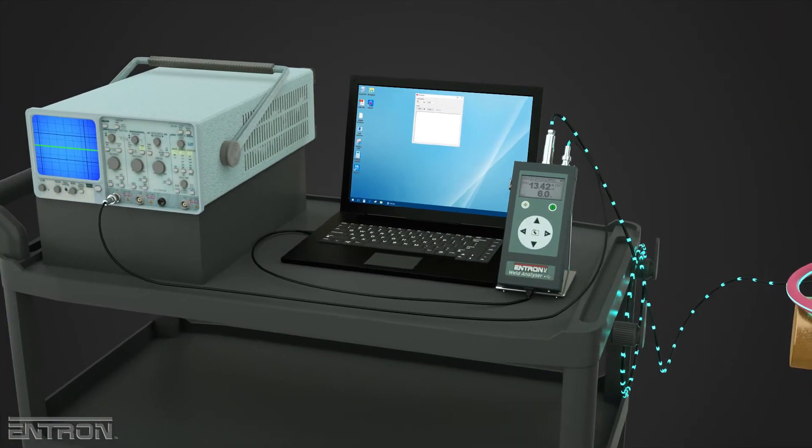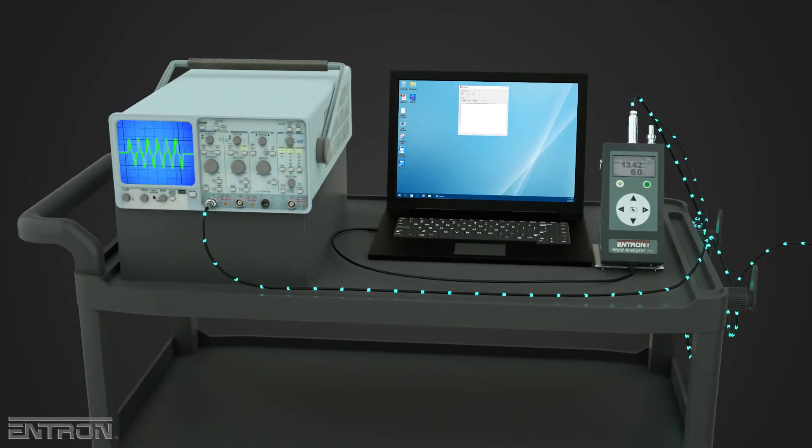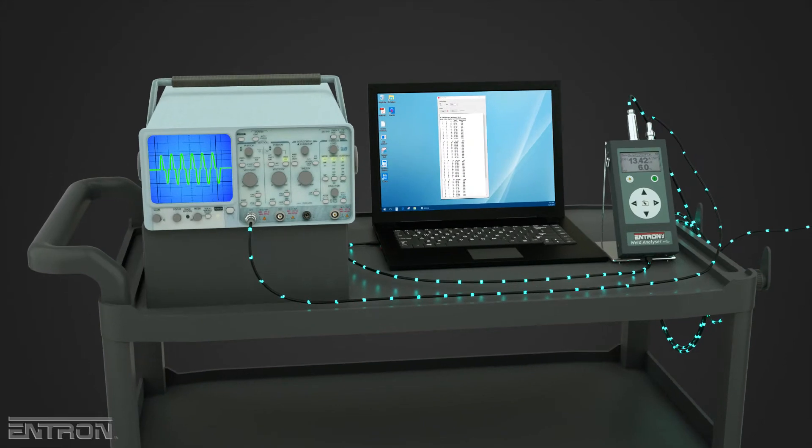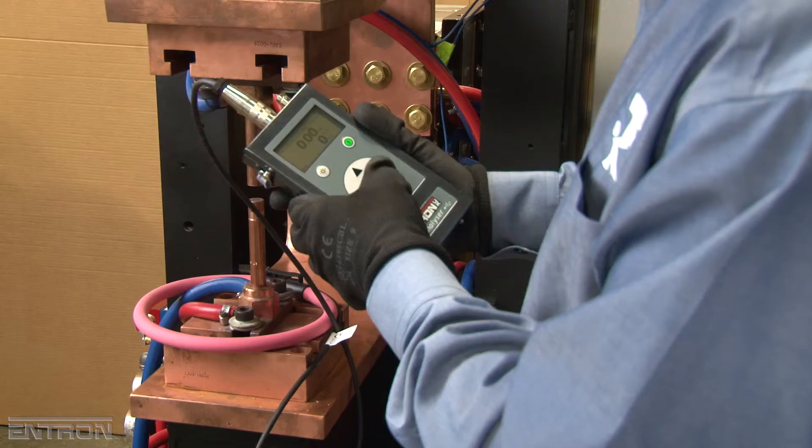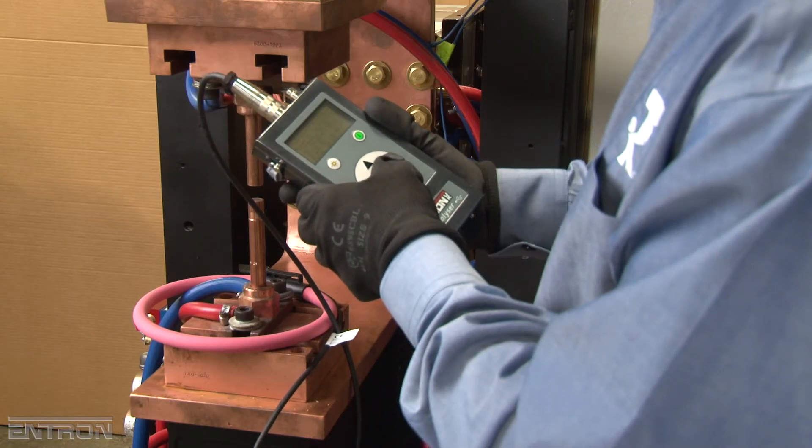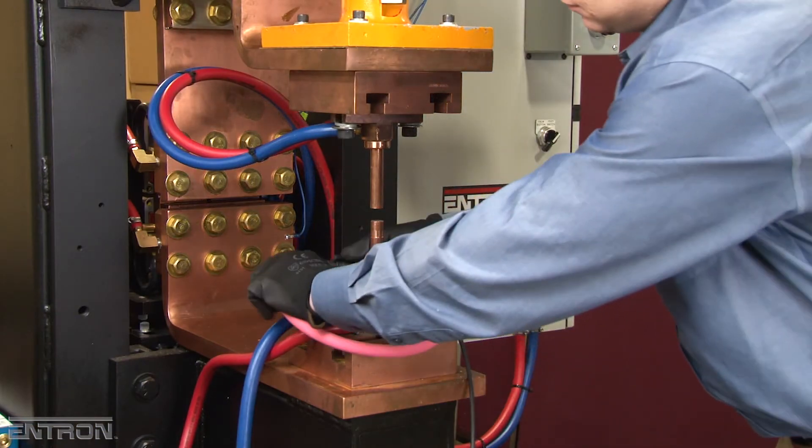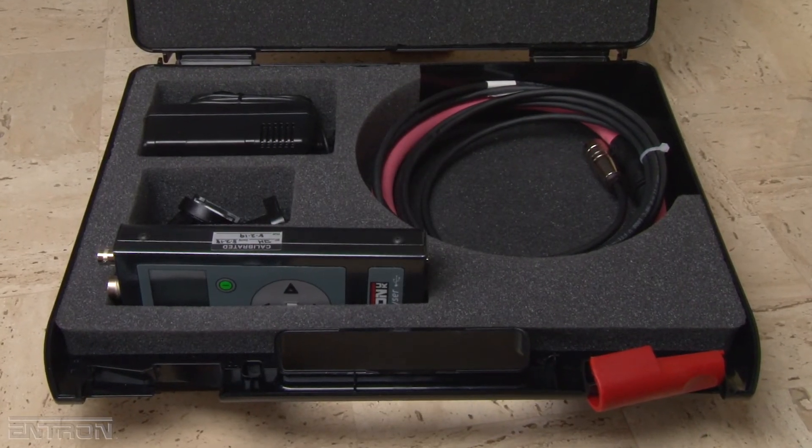The WA2 can optionally be connected to an oscilloscope, and the data can be stored as well as downloaded to a computer via USB. The portable Entron WA2 features a 6-foot lead and comes complete with a calibration certificate, USB cable, and charger.